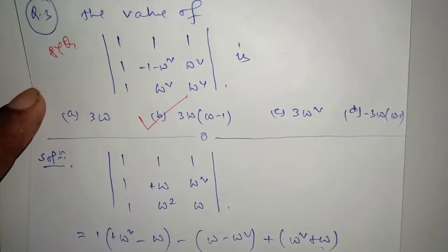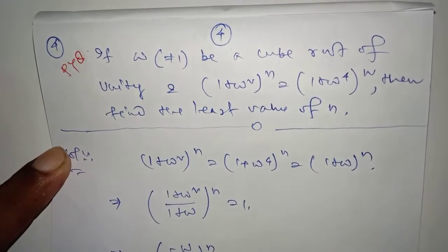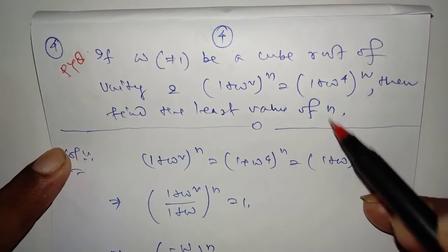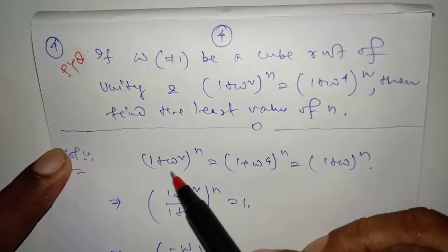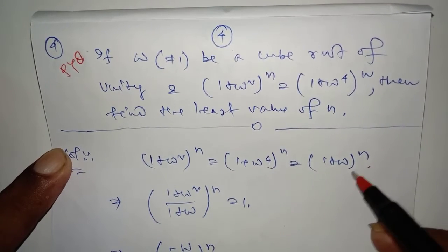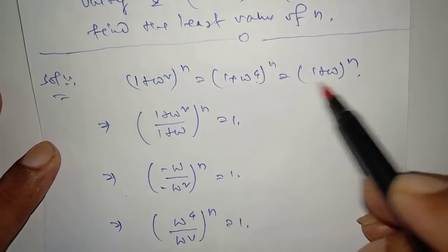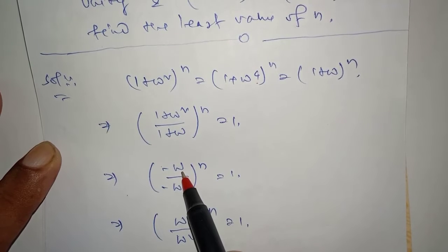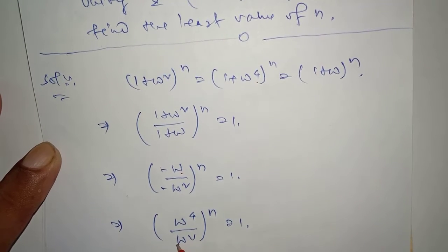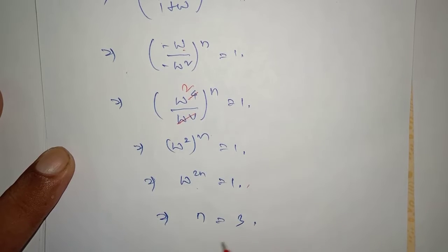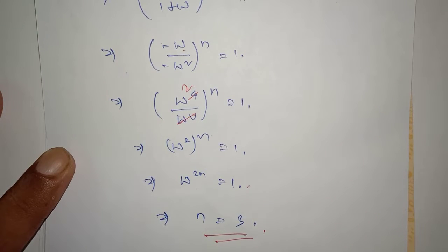If omega is not equal to 1, be a cube root of unity, and (1 plus omega squared)^n equals (1 plus omega^4)^n, then find the least value of n. Omega to the power 4 means omega. Divide both sides — 1 plus omega cancels. Using 1 plus omega plus omega squared equals 0, substitute omega. After simplification, omega squared whole to the power n means omega to the power 2n equals 1. Therefore the least value of n is 3. This is very important for JEE Mains and JEE Advanced.